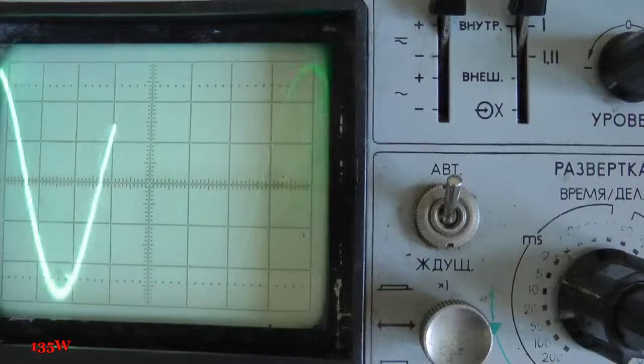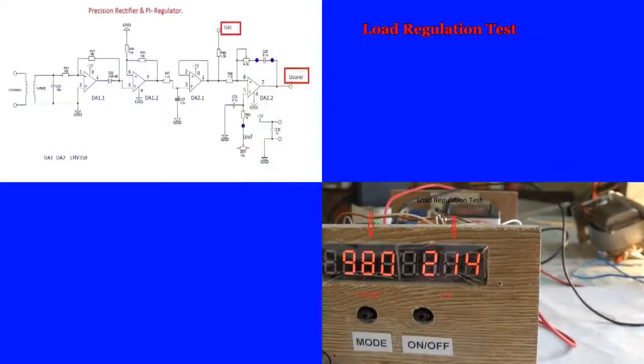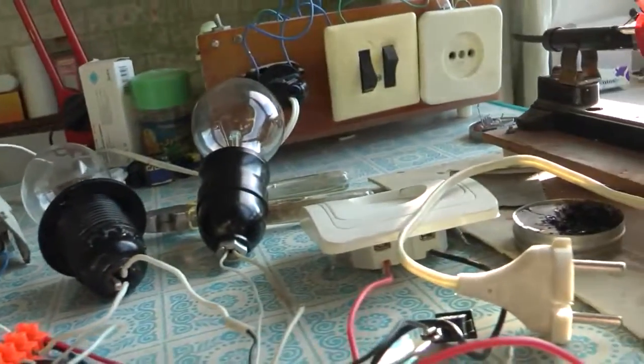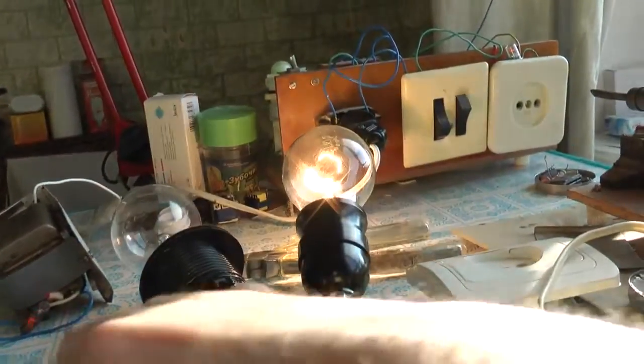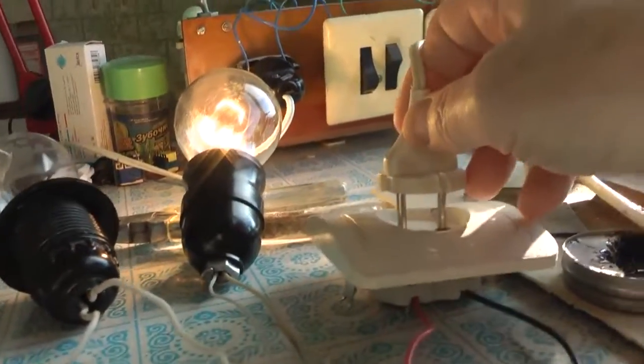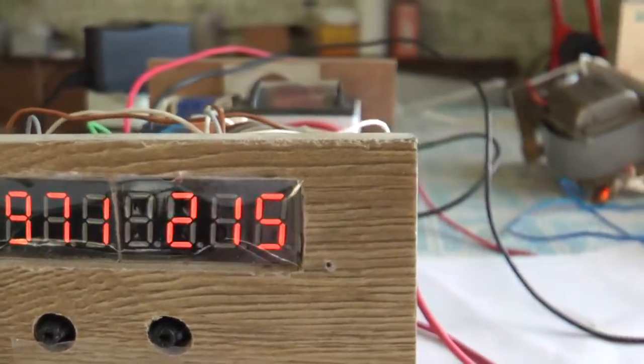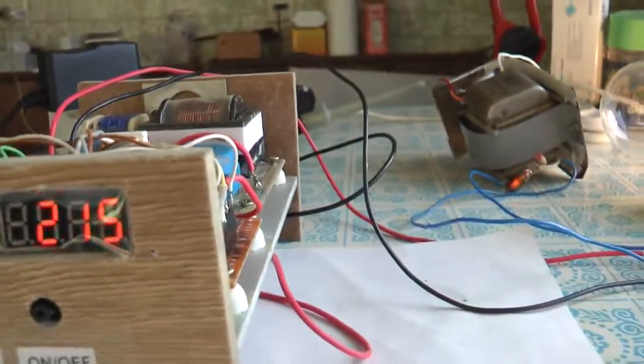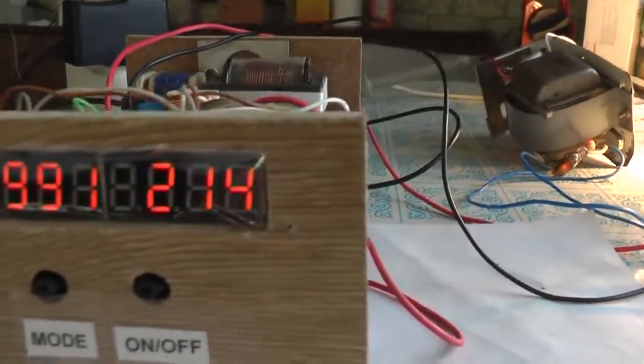And now a little more about the load regulation. During this test we wanted to see how good is PI regulator at keeping output voltage stable. So we have load 100 watts and the output voltage is 215 volts.